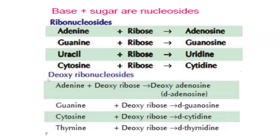Base plus sugar gives us a nucleoside. We have ribonucleosides and deoxyribonucleosides. For example: adenine + ribose = adenosine; guanine + ribose = guanosine; uracil + ribose = uridine; cytosine + ribose = cytidine. These are all ribonucleosides found in RNA.